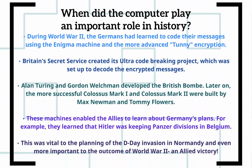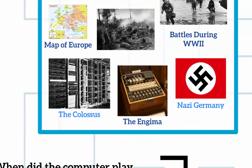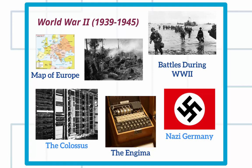What role did the computer play in history? One of the things that was significant is that the computer was developed during the war and improved a great deal of our military planning procedures. Here you can see an example of a machine called the Colossus, and another encryption machine called Enigma, that was used to break codes.